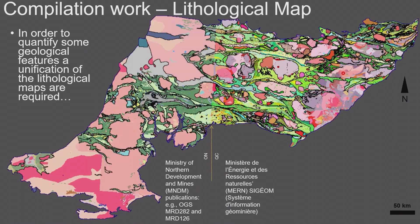If we start with the lithological map, that is a compilation because the Abitibi is pretty much divided in two halves — one on the Ontario side and one on the Quebec side. Their geological departments do not necessarily map at the same scale or with the same detail. The big part of the lithological compilation was really to try and merge that and find a common denominator to make a unified map across the entire Abitibi. We wanted that so we could quantify some of these geological features to start interrogating VMS endowment.